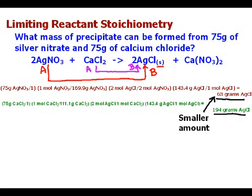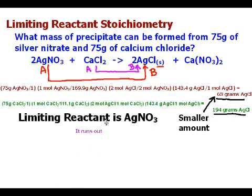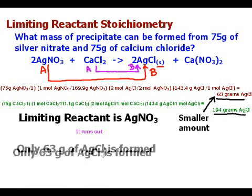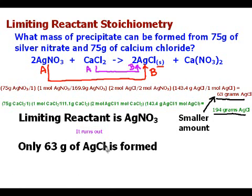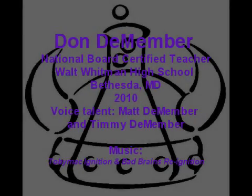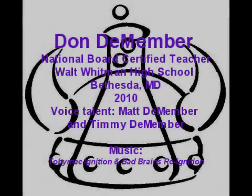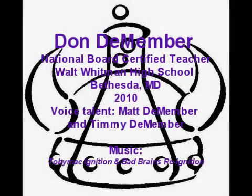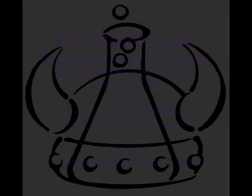Why can't we produce 194 grams? Once we make 63 grams of AgCl, all of our AgNO3 is gone — it's used up. So that is our limiting reactant; it runs out. We produce only 63 grams of AgCl. Thanks for joining us for this edition of ChemCast. We'll see you next time.